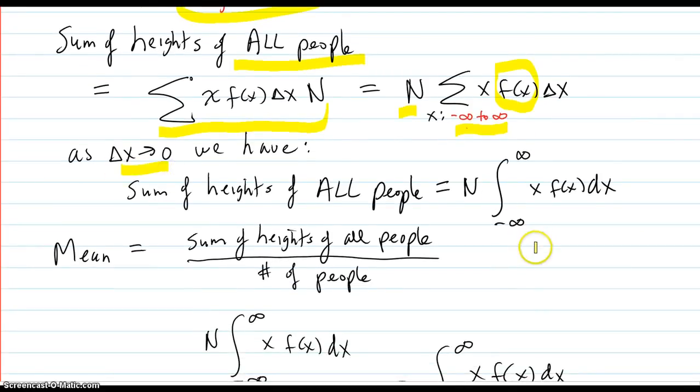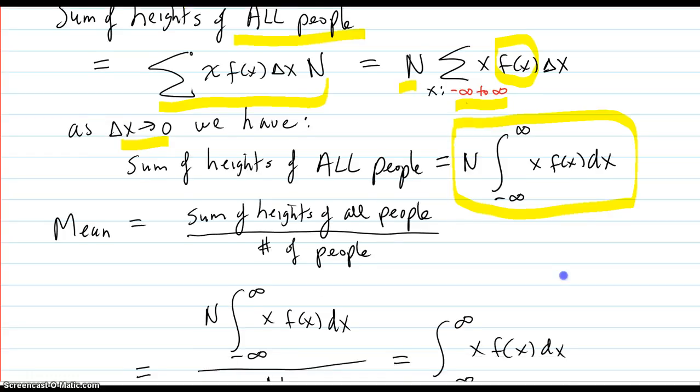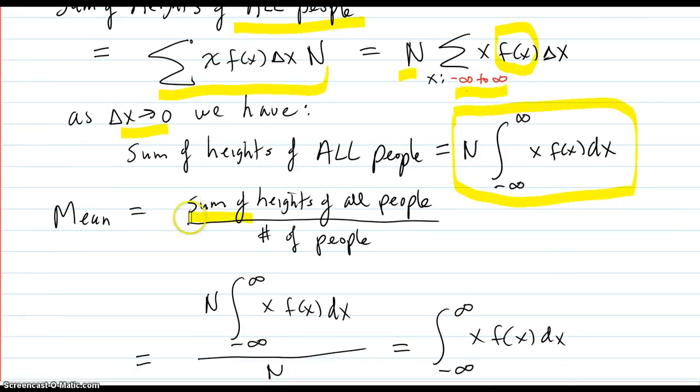we then have in the limit that the sum of heights of all the people are this integral. And so the mean is the sum of the heights of all the people over the number of people.